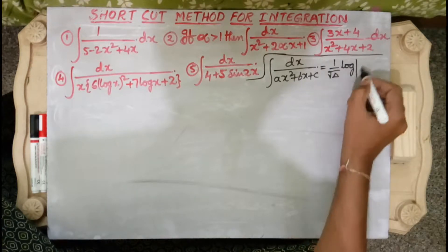Here Q means the quadratic expression ax² plus bx plus c, and k is a constant. Delta means b² minus 4ac. Q' is the derivative of the quadratic expression Q. This formula is applicable when delta is greater than 0.